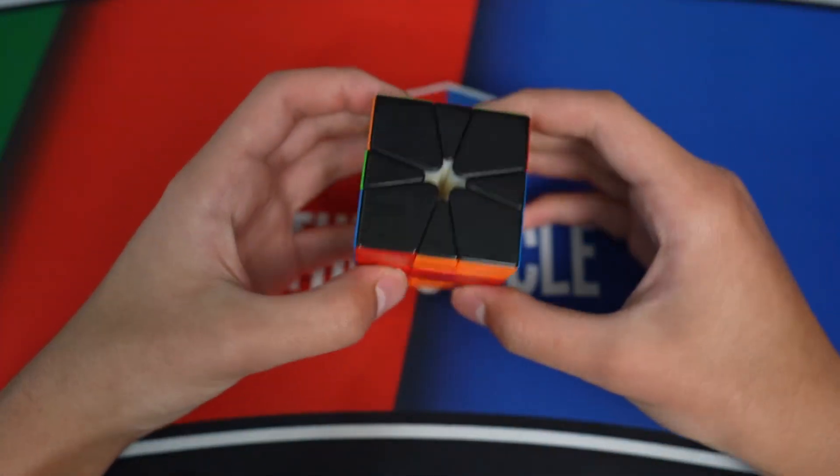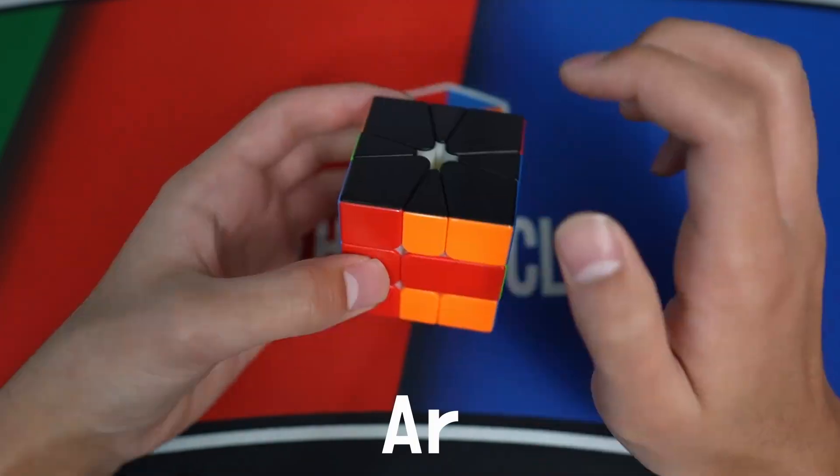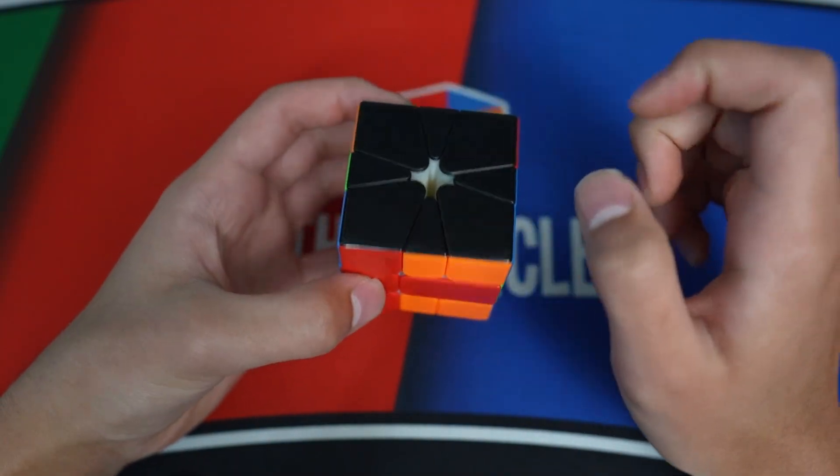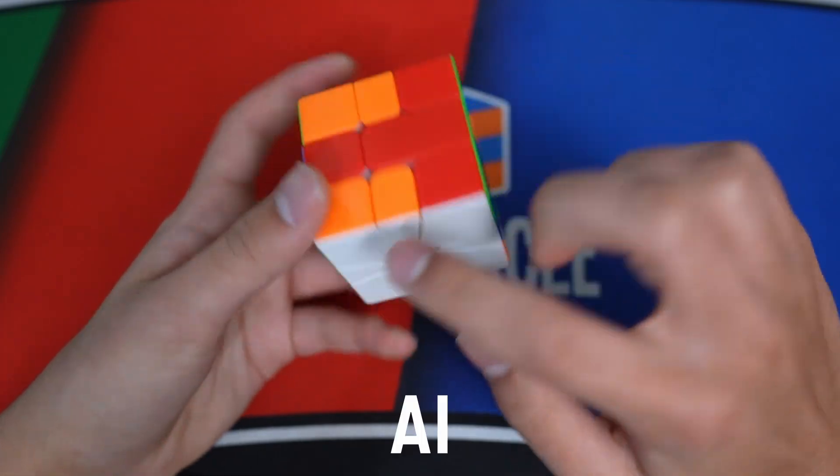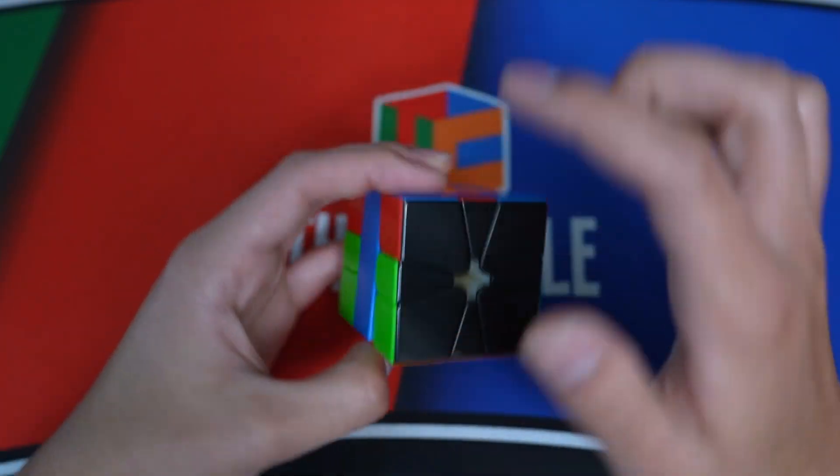Next up is A perms. And this is called AR because the block is on the right side when the headlights are in the back. Similarly, this would be called AL because the block is on the left when the headlights are in the back.